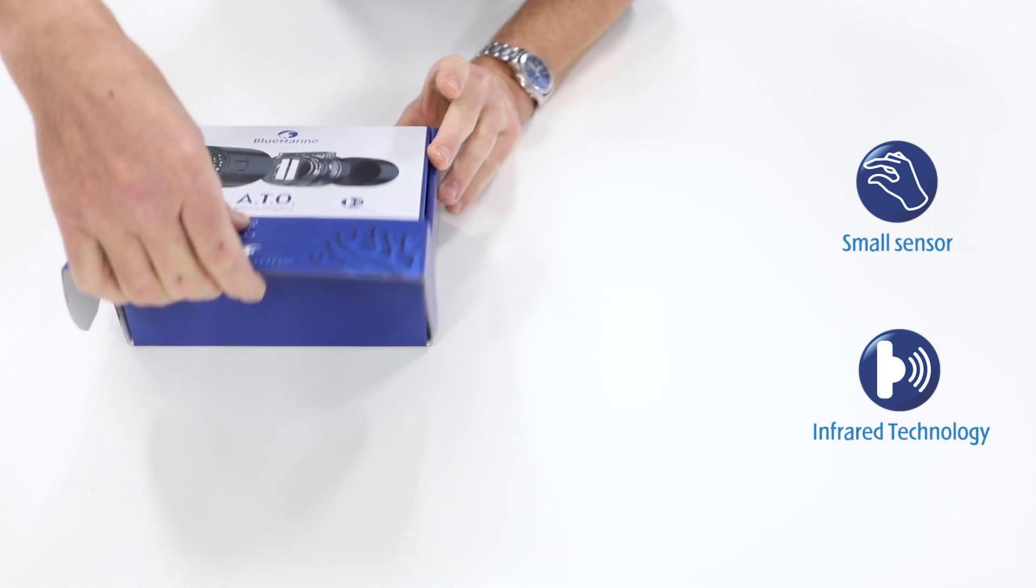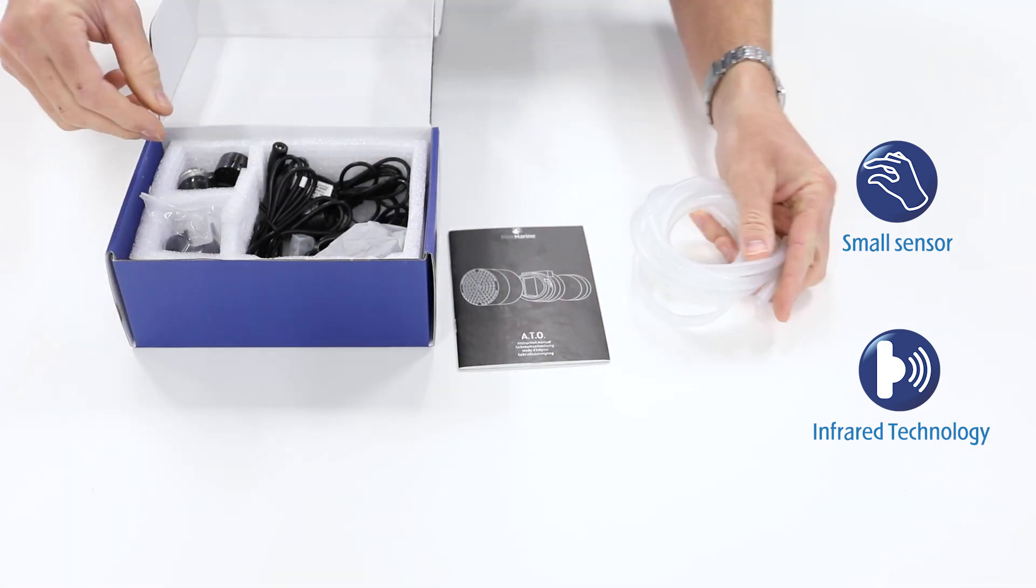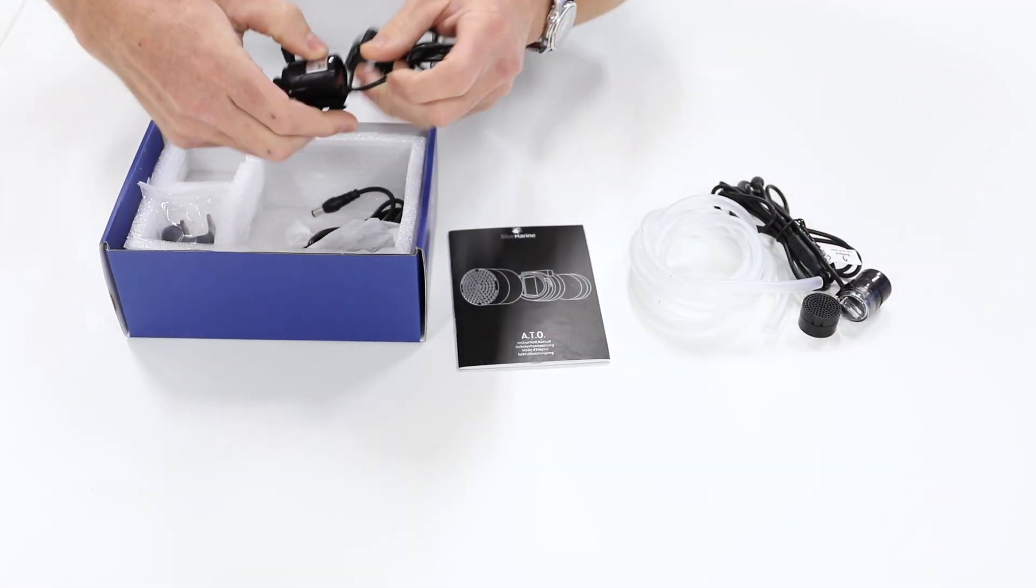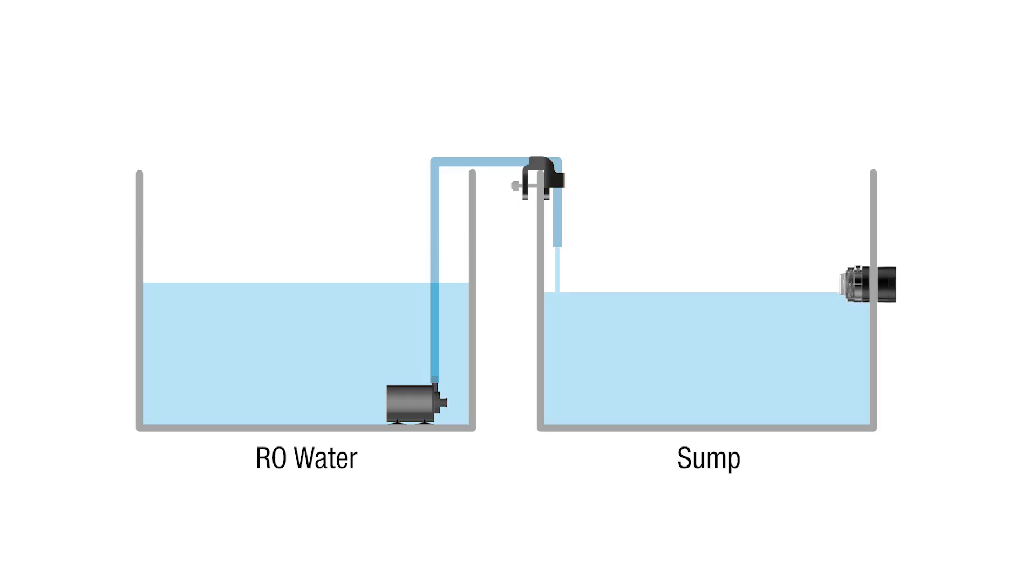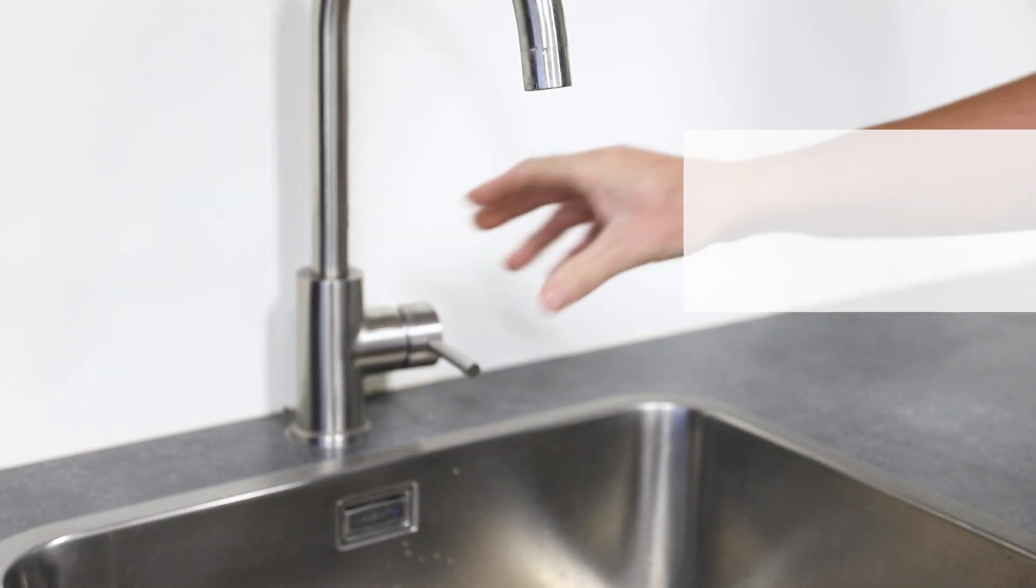Today I will show you how to install and work with the BlueMarine Auto Top Off system. The key feature of the BlueMarine ATO is that it is a small but reliable system which automatically tops off your seawater with RO water to make up for evaporation.